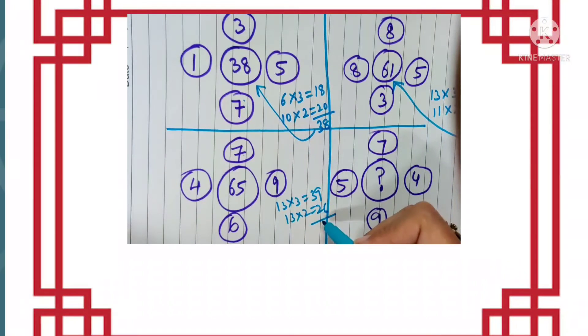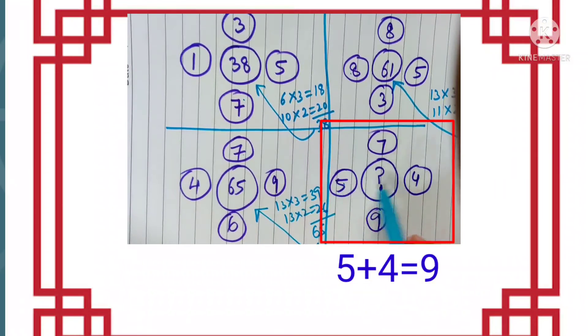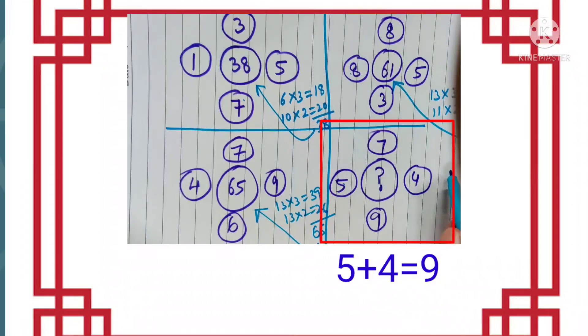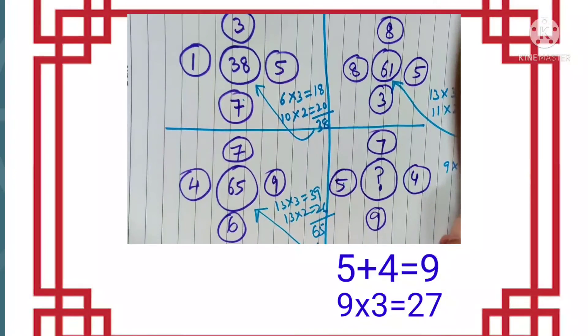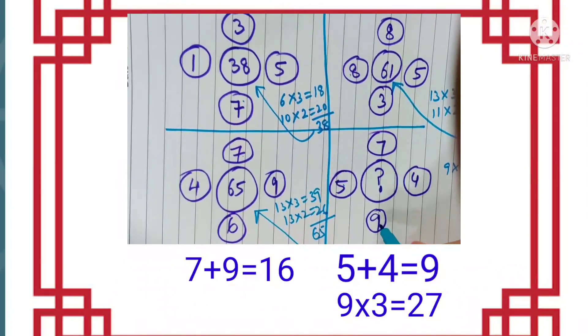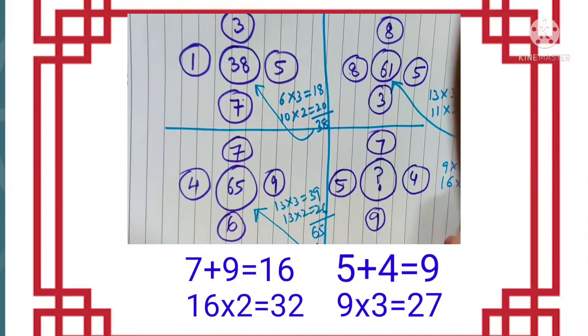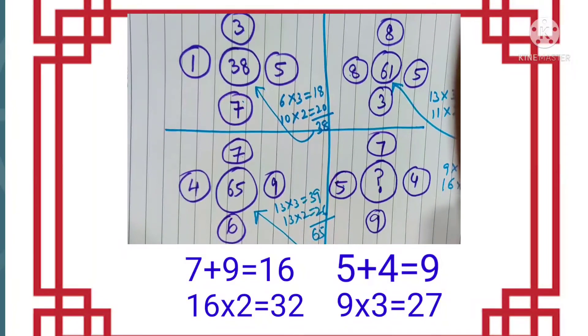And when we add 39 and 26 we get 65. So what is the answer over here? Yes, let us calculate this. 5 plus 4 is 9. 9 into 3 is 27. Then 7 plus 9 is 16. 16 into 2 is 32.